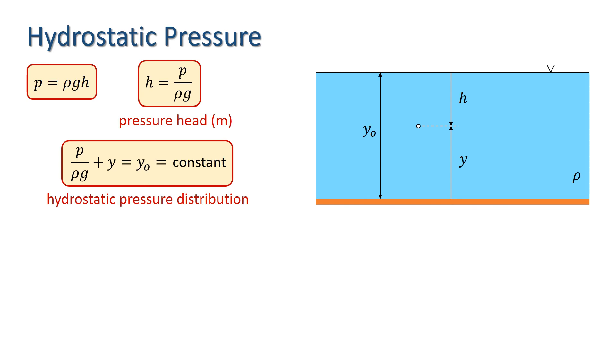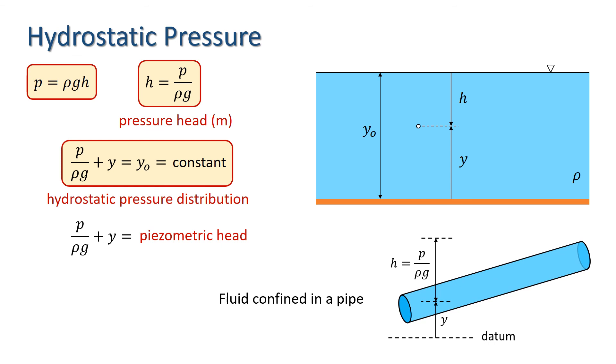The constant depth y nought is called the piezometric head, a term we use both with a standing fluid and a fluid flowing with a free surface. It's worth noting that when we have fluid confined in a pipe, we still have a hydrostatic pressure distribution, and this provides the basis for one method of measuring pressure, the piezometer.